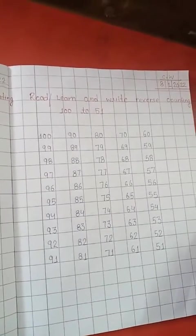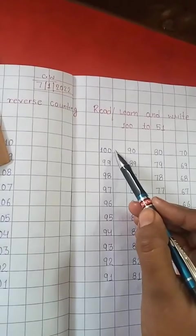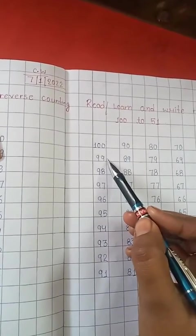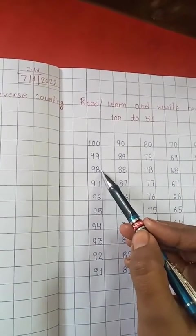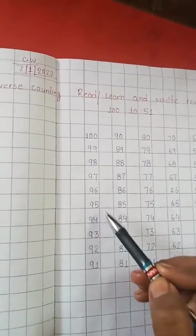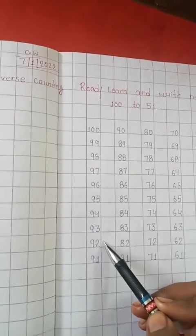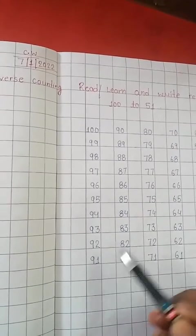So our reverse counting is complete. Ok, so let us repeat again. Ok, 100, 99, 98, 97, 96, 95, 94, 93, 92, 91, 90.